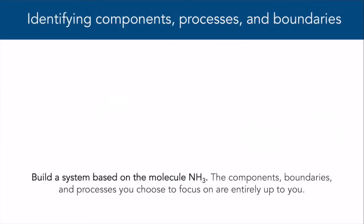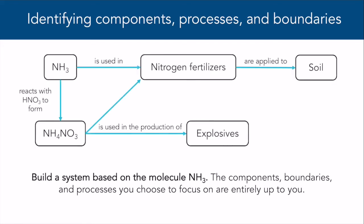We're now at the point where we can begin to practice building our own systems. I want you to pause the video and build a system based on the molecule ammonia, or NH3. Here's an expanding example to help you get started, so feel free to build off this one. Remember that the components, boundaries, and processes you decide on for the system are entirely up to you. Alright, you can pause the video now and build your system, and when you're ready, you can unpause and we'll talk about specific components, boundaries, and processes within your systems.